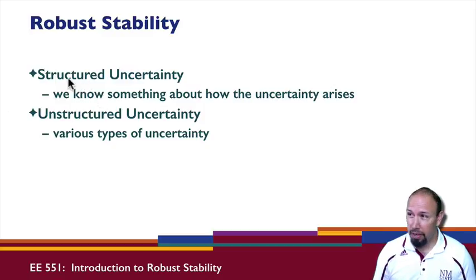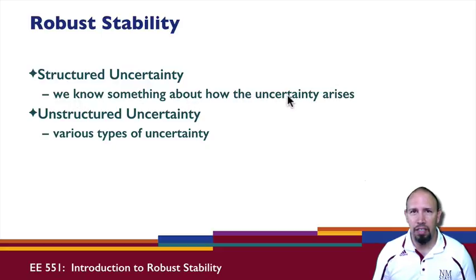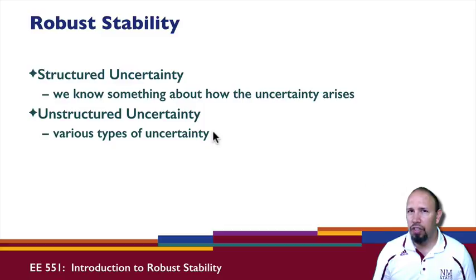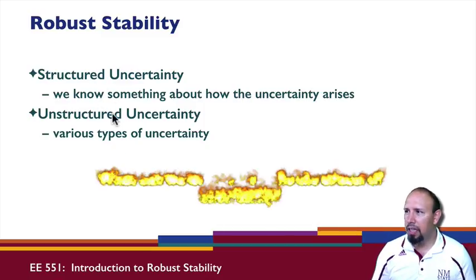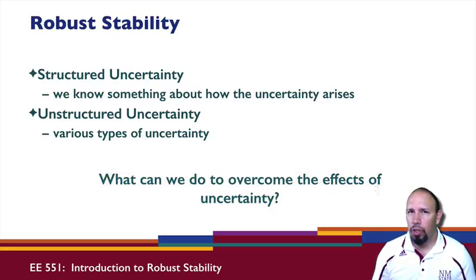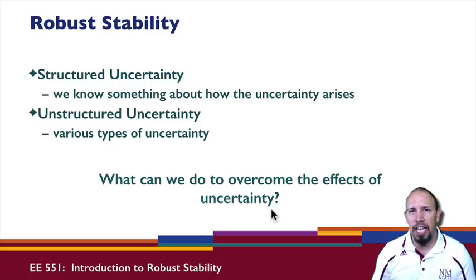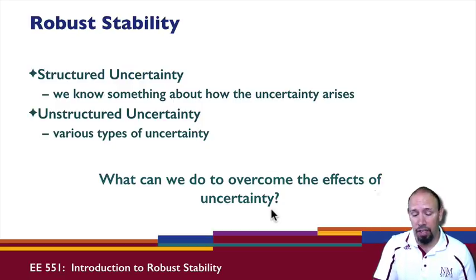We have two different kinds of uncertainty. Structured uncertainty — that is, we know something about how the uncertainty arises; it's not completely uncertain, and we know the kind of uncertainty to anticipate. Then there's unstructured uncertainty, which includes various other types. An important question is how can we assess whether the uncertainty in a system is catastrophic?